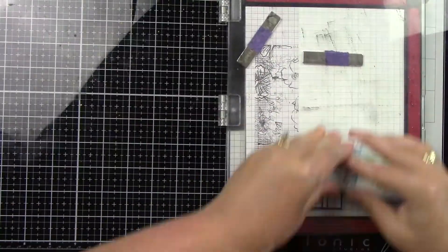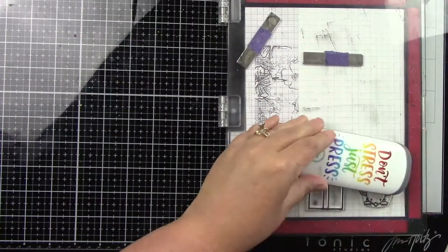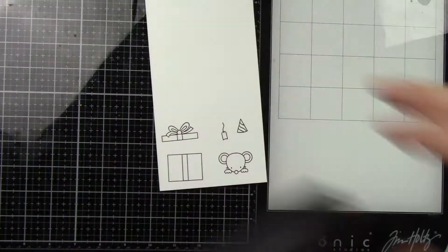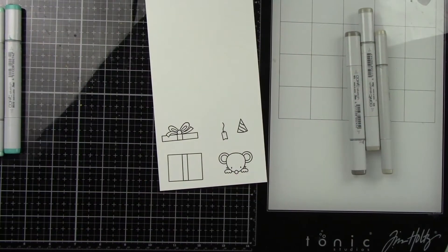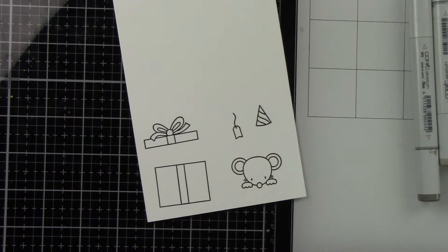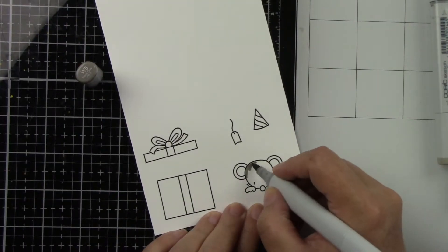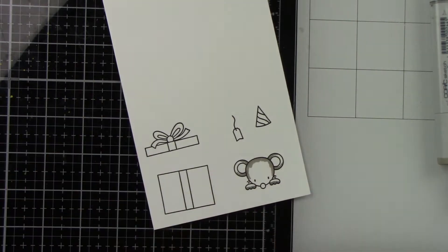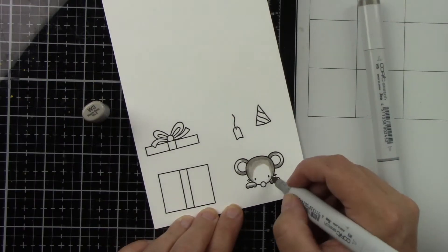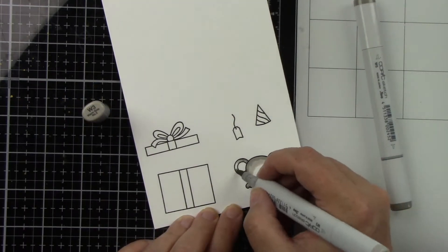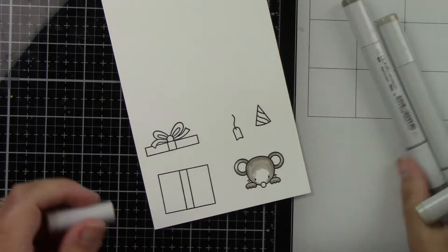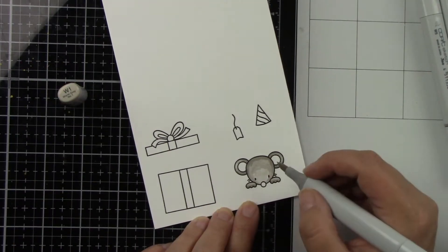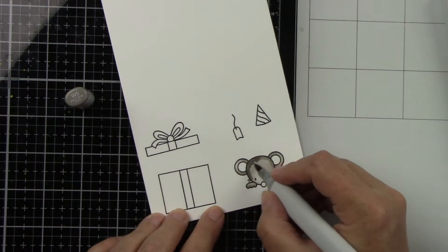These cute little images from the Popping By stamp set from Heffy Doodle, I'm going to stamp and color with my Copic markers. I ended up having to color the base part of the present a second time because I didn't like the way I colored it the first time. I was just struggling today.